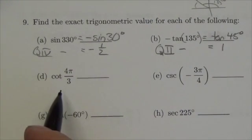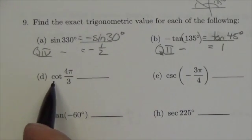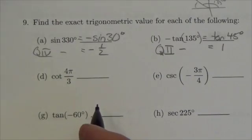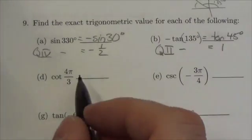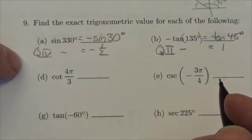Hi, so this question here is asking me to come up with the exact value of the cotangent of 4π over 3. Okay, well, first of all, 4π over 3, let's just think about this.